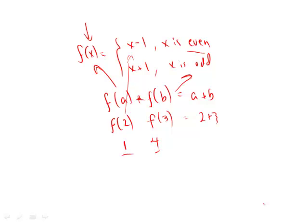Well, when it was even, it went down 1. When it was odd, it went up 1. So the net gain is nothing. It's just the same as saying a plus b.